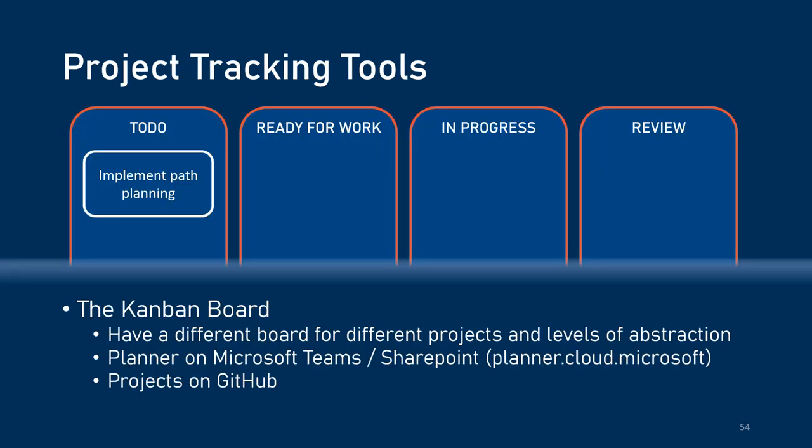Going into project tracking tools, we're actually going to be using a lot of Kanban or Kanban-like tools. A Kanban board can be used to track a project action item through various phases. We have boards at different levels for different projects, and there are two main implementations of Kanban boards that we use. One is Planner, a Microsoft product available at planner.cloud.microsoft, and for more software-oriented things, we track them on the Projects tool on GitHub.